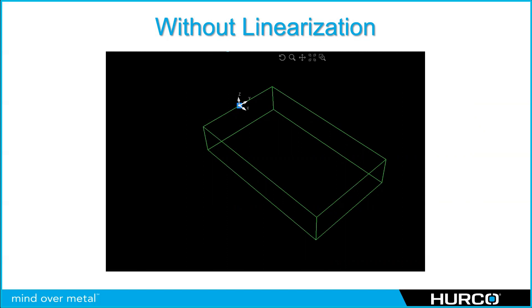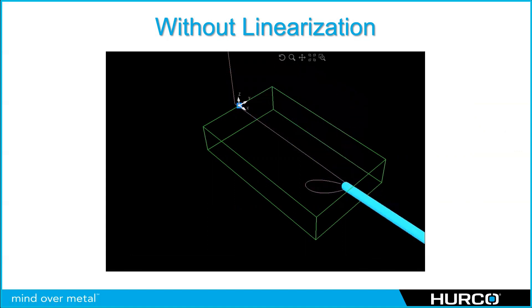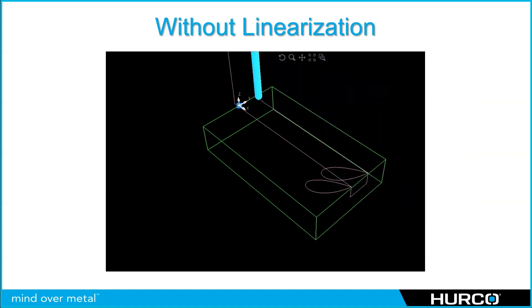There are two videos here. This first one shows a toolpath without linearization. You're going to see the tool move to the front corner or edge of the part, then rotate to the commanded rotation, gouging the part. The tool tip will be in the correct location at the beginning and end of the move, but it's gouging the part very badly. Watching it run: we come down to the edge, it begins to rotate, and we're not controlling the tip of the tool until we get to the end of the movement — it's digging into or gouging the part very drastically.